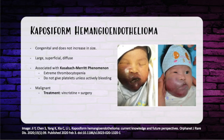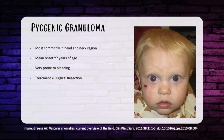Kaposiform hemangioendothelioma is present at birth and doesn't increase in size. It's often large, superficial, and diffuse, with overlying skin that is deep red, purple, tense, and shiny, typically involving the trunk and extremities. The most important association is Kasabach-Merritt phenomenon — extreme thrombocytopenia with platelets less than 25,000, because platelets are trapped by the tumor. Don't transfuse platelets unless the patient is actively bleeding or preoperative. DIC can also develop. Since this is a malignant tumor, primary treatment is chemotherapy — think vincristine — combined with surgical resection.